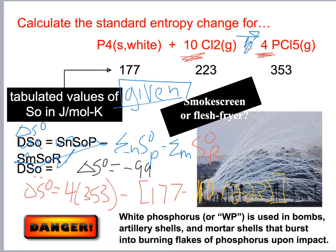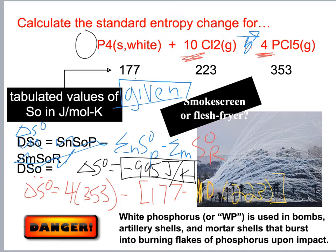That gives us delta S naught equals negative 995 joules per Kelvin. Does a negative make sense? Yes — we're going from 11 moles down to 4 moles, so we're losing entropy and getting more ordered.